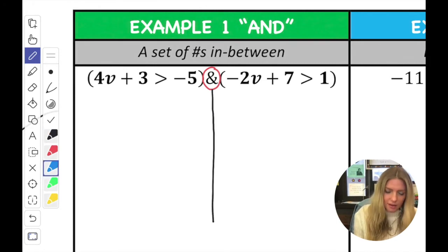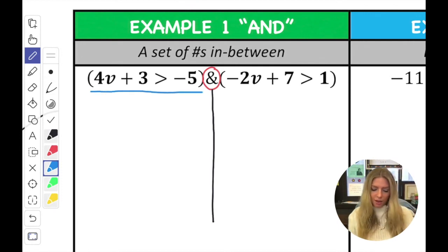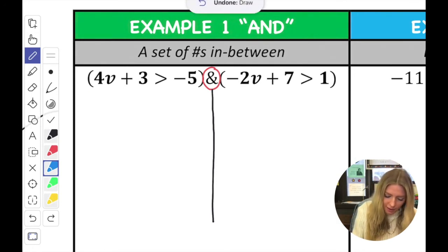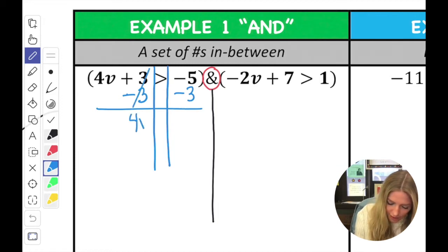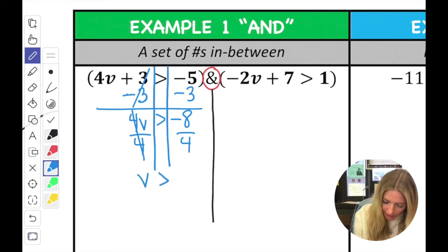So the first inequality is here, 4v plus 3 is greater than negative 5. So I'm just going to go ahead and solve that one first. I like to put my ladder. I'm going to just solve it quick because we already know two steps. So subtract 3 to both sides. It's 4v is greater than negative 8. Watch those integers. And then v is greater than negative 2.